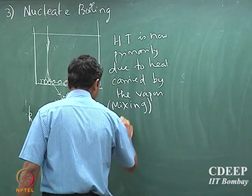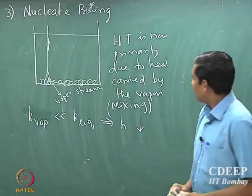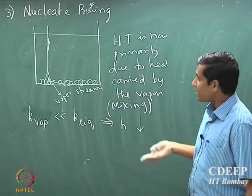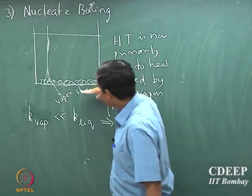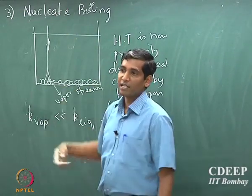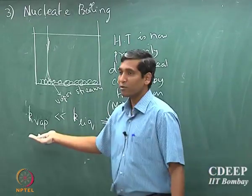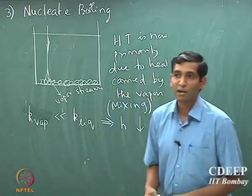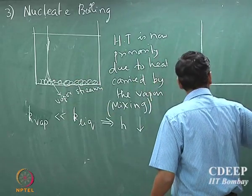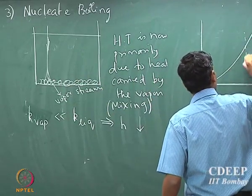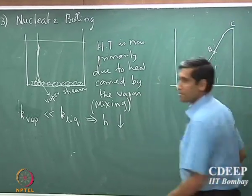Therefore, the heat transport coefficient will start decreasing with more vapor formed. The reason is that the vapor which is formed is immediately transported out and is not in complete contact with the bottom surface. The residence time for the vapor phase near the surface is very small, the contact time is small, and the conductivity is also very small. So the heat transport coefficient will start decreasing as soon as you reach the third stage, all the way up to the maximum.